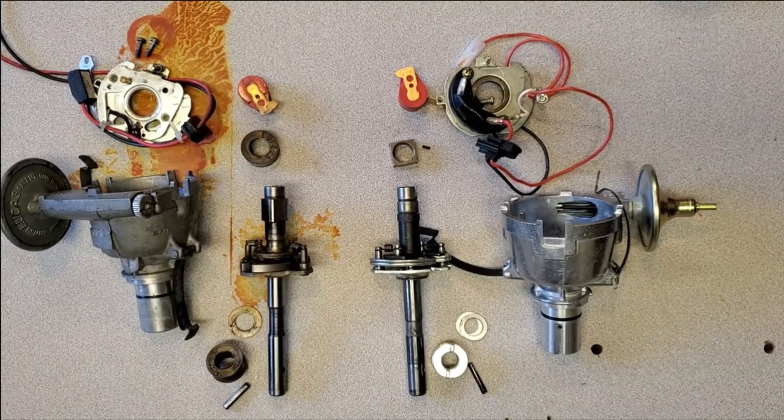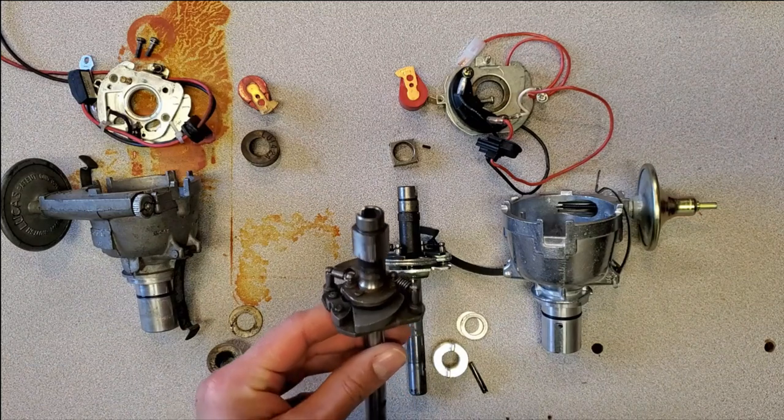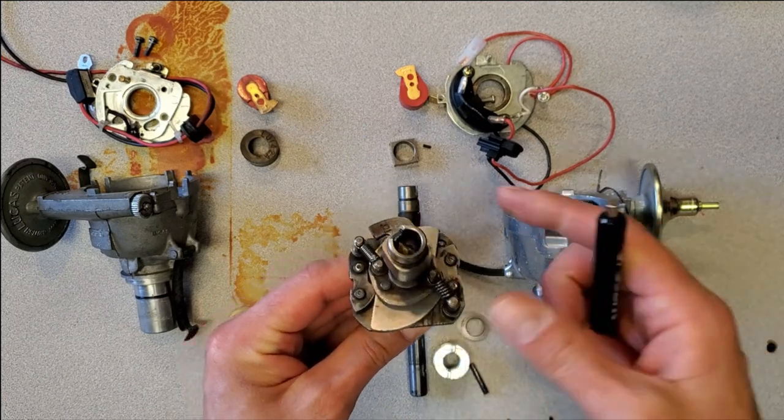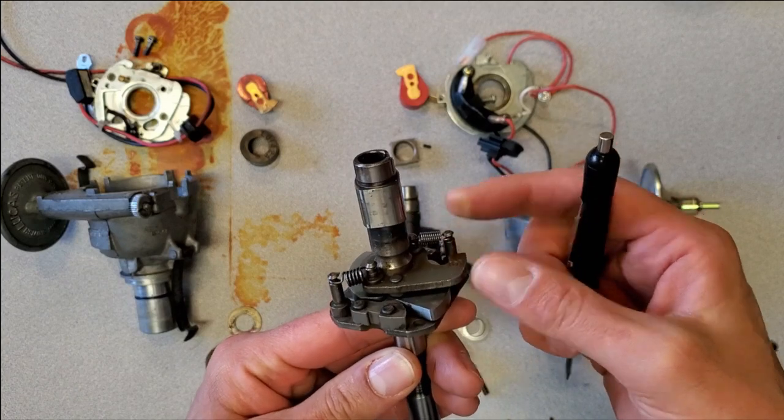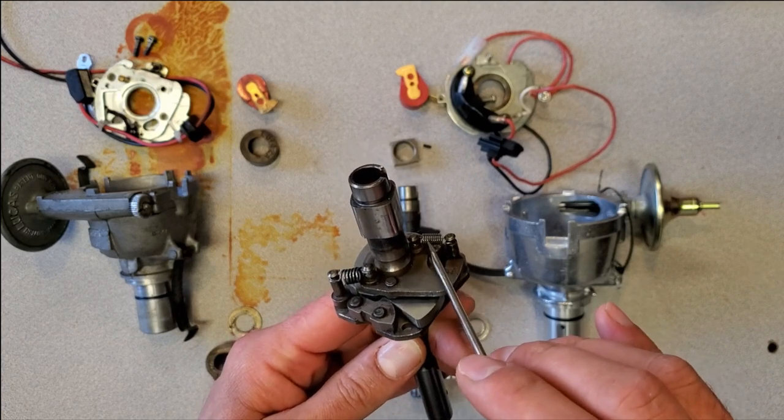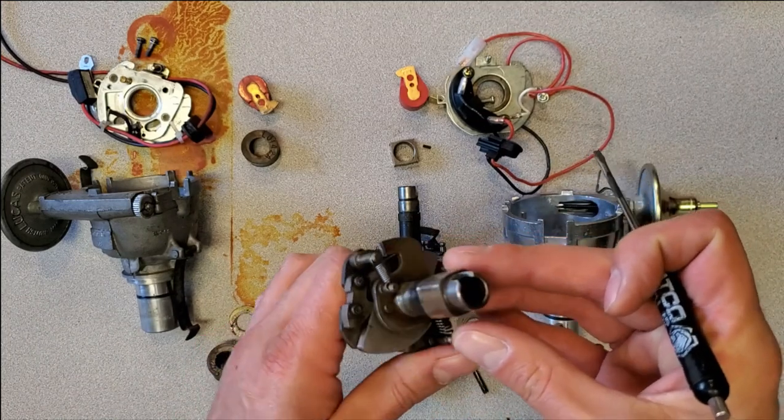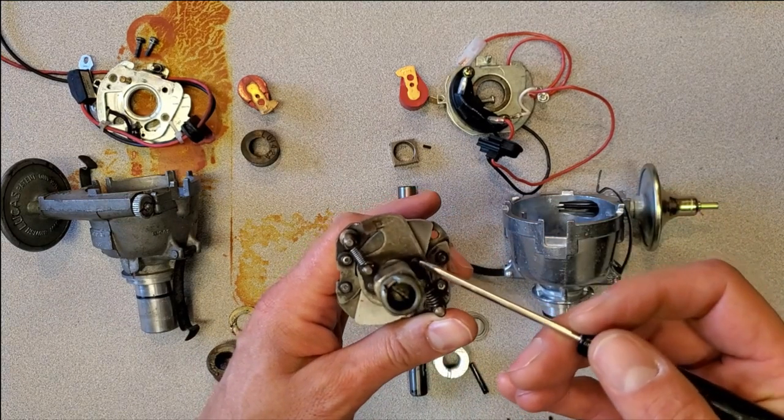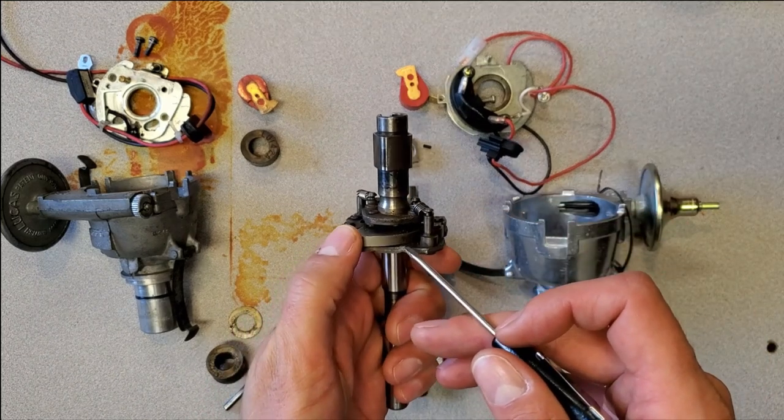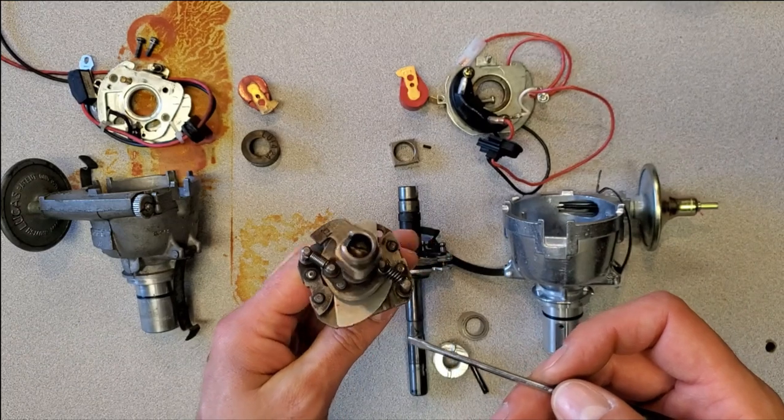Before we move on to the distributor machine, I just wanted to show the internals of the Lucas. As I've shown before in previous videos, this is off of a 25D. So the cam weights are here, advance mechanisms here, springs. That's a differential spring assembly, so the stronger secondary, the weaker primary. In my previous video of why you should replace one of these, I showed how much wear is between this cam and the central shaft, and also the fact that there's friction between these weights and the plate.